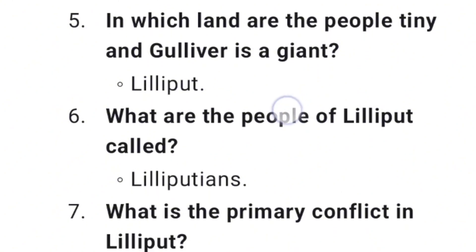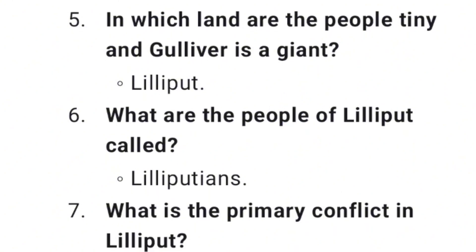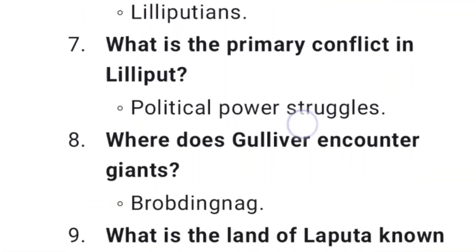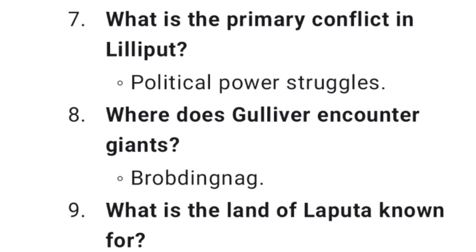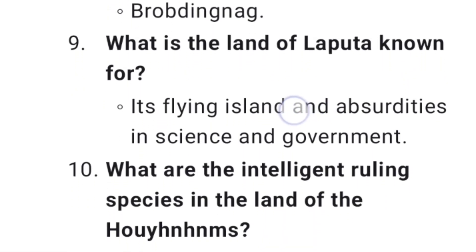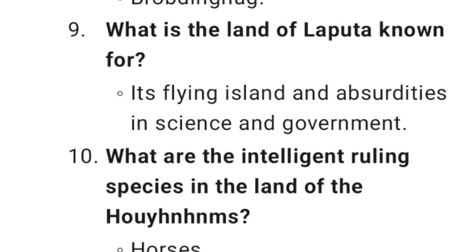In which land are the people tiny and Gulliver is a giant? Lilliput. What are the people of Lilliput called? Lilliputians. What is the primary conflict in Lilliput? Political power struggles. Where does Gulliver encounter giants? Brobdingnag. What is the land of Laputa known for? Its flying island and absurdities in science and government.